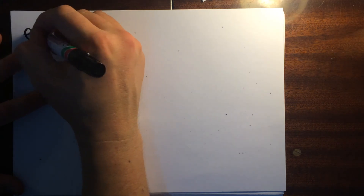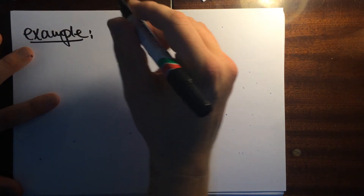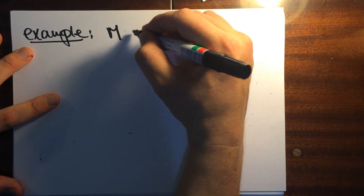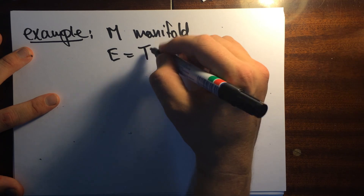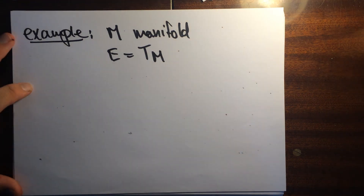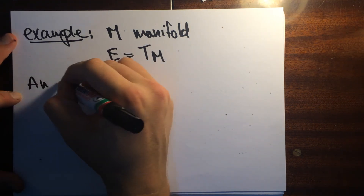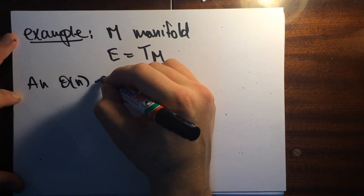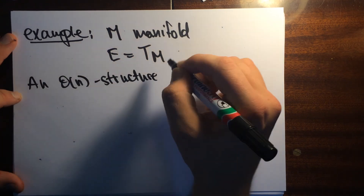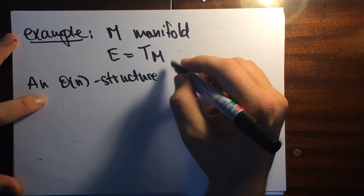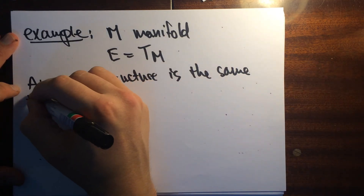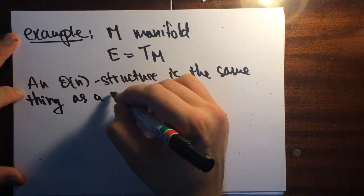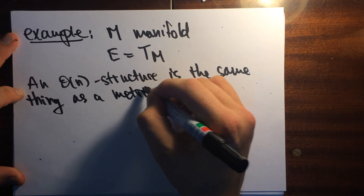A further sub-example: if M is a manifold and E is the tangent bundle, then an O(n) structure is the same thing as a Riemannian metric.